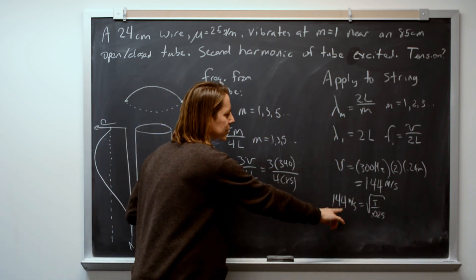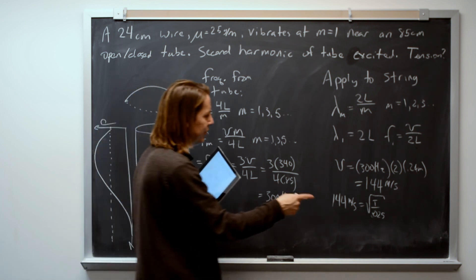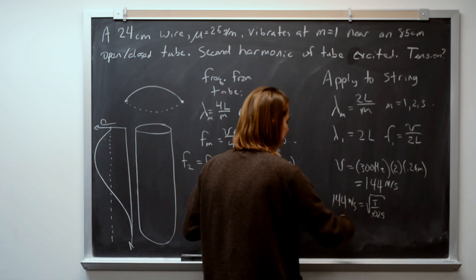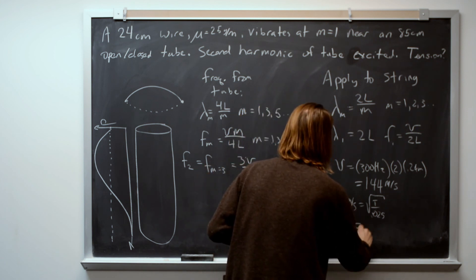Just square both sides. When you square 144, that's actually called doing the gross gross. You've never done that before. And you'll square both sides. You'll multiply by 0.025. And the tension you get is 518 newtons.